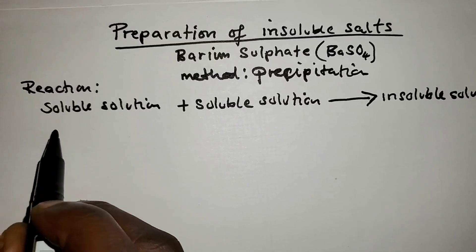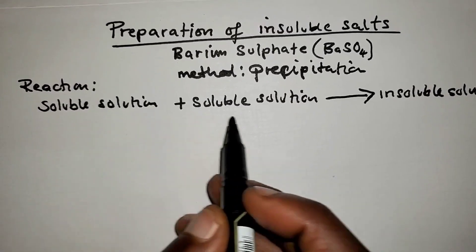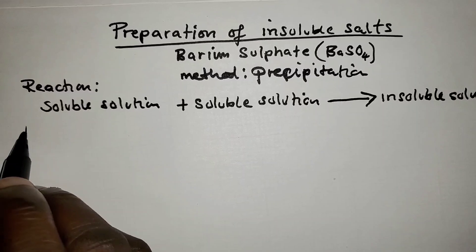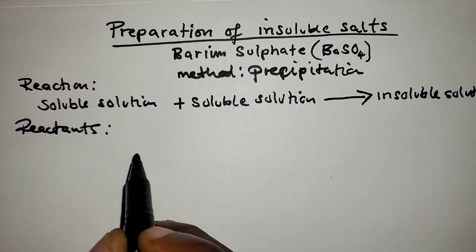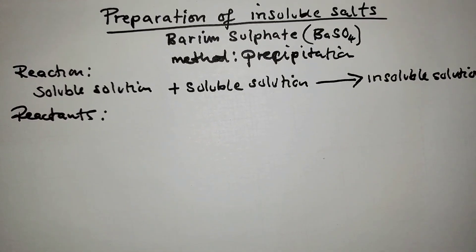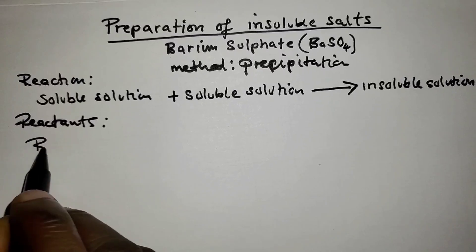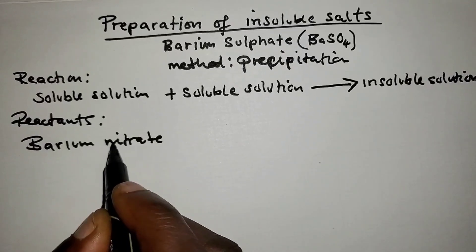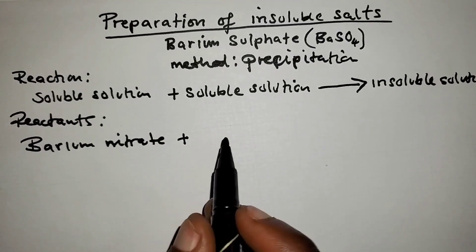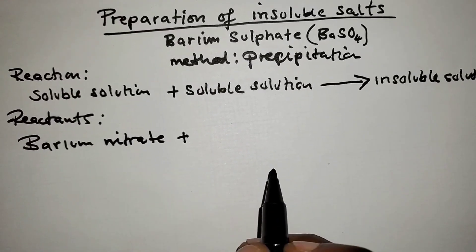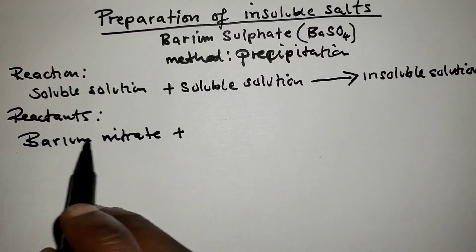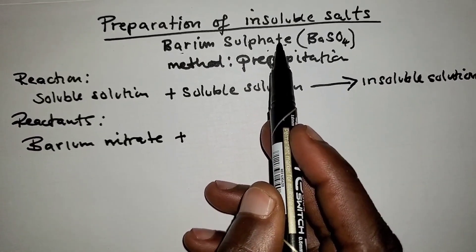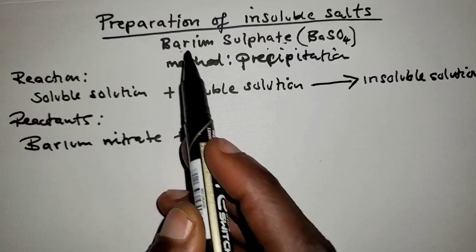When preparing barium sulfate, a nitrate solution and a sodium solution are needed as reactants. We need barium nitrate as one reactant, since one reactant should contain barium and the other should contain sulfate.